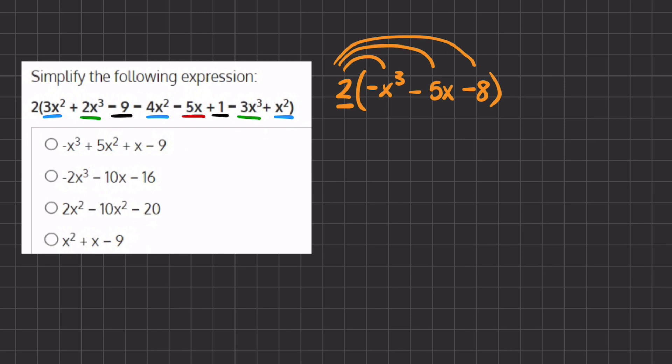So 2 times negative x to the power of 3 gives us a negative 2x cubed. And now 2 times negative 5x gives us a negative 10x. And 2 times negative 8 gives us a negative 16.